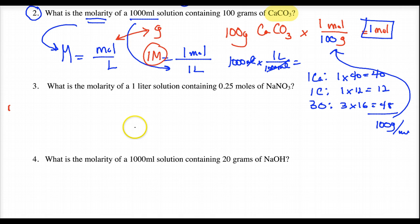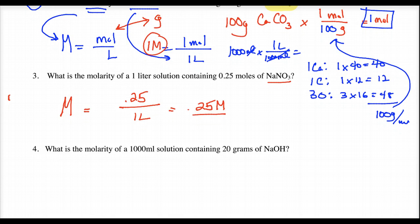Number 3, what's the molarity of a 1 liter solution containing 0.25 moles? I say at this point, really? Well, if you have 0.25 moles of my solute, that's the substance being dissolved, and I have a liter of solution, last time I checked, it's 0.25 M. Take a break. Break's over. Continuing on.